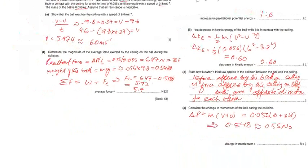As you know, the weight of the ball is downward, mg, which is the gravitational force applied on the ball. Mass is 0.056, g is 9.8, so the weight of the ball is 0.5488. The resultant force equals the sum of the weight plus the force of the ceiling on the ball.